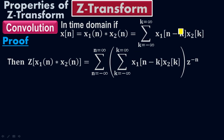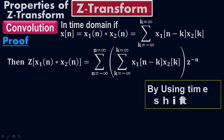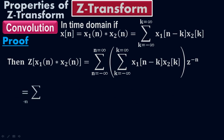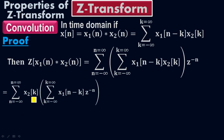I plug in that expression for X(N). By using the time-shifting property, I have the term N minus K, meaning N has been shifted by K. Since everything has a product, I can interchange the terms — I can put X2(K) first and then X1(N minus K), and also move Z to the negative N accordingly. Product with X2(K) and product with Z to the negative K allows rearranging their positions.